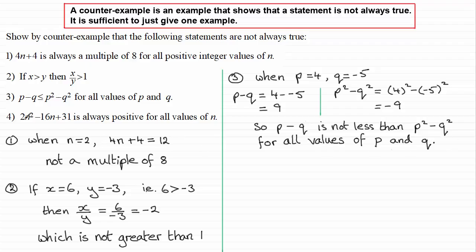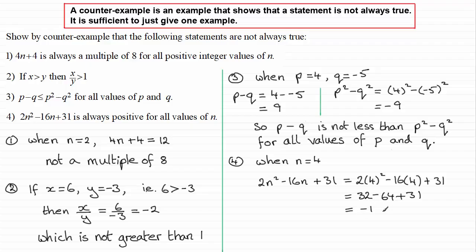Number 4: 2n squared minus 16n plus 31 is always positive for all values of n. Trying different values of n, I've chosen n equals 4. When you substitute that in, you end up with negative 1. So you can see it's not always positive for all values of n. I hope that's given you some idea of what we mean by a counter example. Thanks for listening, and hopefully that's been of some help.